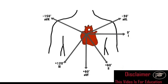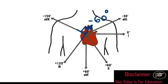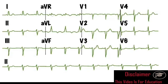Going back to the diagram: AVR is isoelectric, which means the axis is at exactly 90 degrees to AVR. Since we established there's a left axis deviation, the axis must be going 90 degrees from AVR in that direction. AVR sits at minus 150 degrees, so adding 90 degrees gives us minus 60 degrees. The axis of this ECG is therefore minus 60 degrees — left axis deviation.